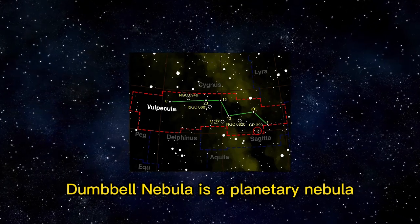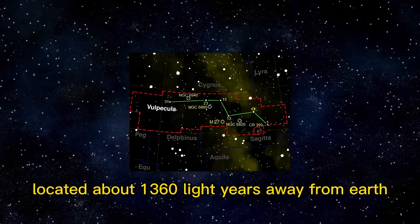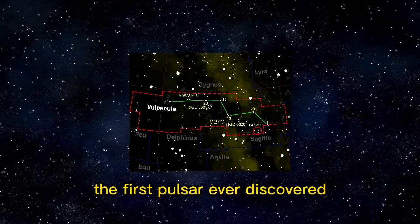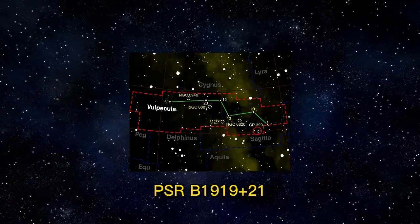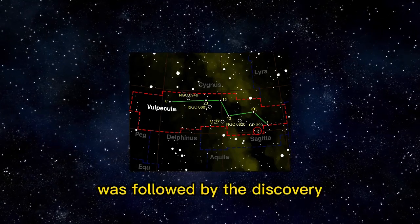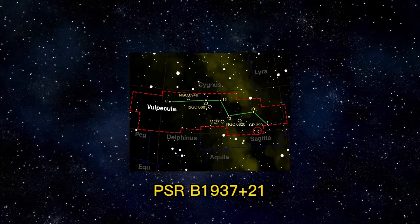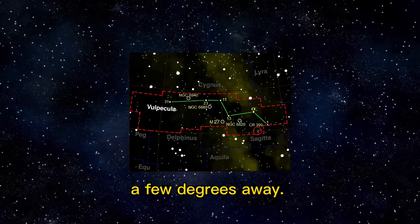The Dumbbell Nebula is a planetary nebula located about 1,360 light-years away from Earth. The first pulsar ever discovered, PSR B1919+21, was followed by the discovery of the first millisecond pulsar, PSR B1937+21, a few degrees away.